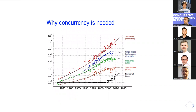Why is concurrency needed today? Looking at the chart of transistors per square meter, the number is still increasing. Moore's Law told us that as transistor count grows in processors, single-thread performance would follow — and that was happening until mid-century. However, single-thread performance has gone a bit flat, even slightly down. The answer is the number of cores, which is still increasing.